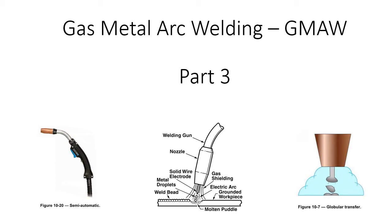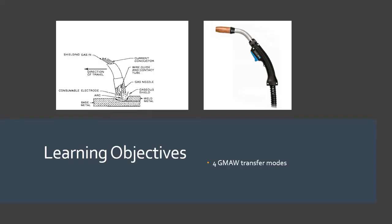Gas Metal Arc Welding GMAW Part 3. In this one we're going to talk about the four gas metal arc welding transfer modes: spray transfer, globular transfer, short-circuiting transfer, and pulse spray transfer.